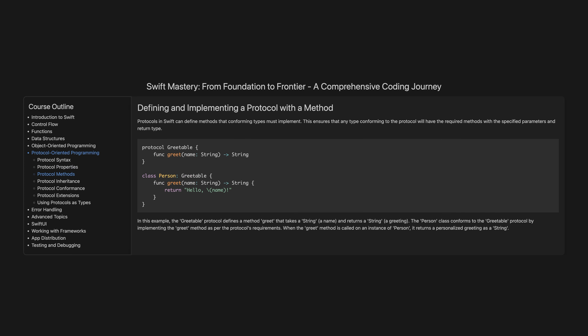Protocol methods. Protocols in Swift can define methods that conforming types must implement. This ensures that any type conforming to the protocol will have the required methods with the specified parameters and return type. In this example, the Greetable protocol defines a method greet that takes a string — a name — and returns a string, a greeting. The Person class conforms to the Greetable protocol by implementing the greet method as per the protocol's requirements. When the greet method is called on an instance of Person, it returns a personalised greeting as a string.